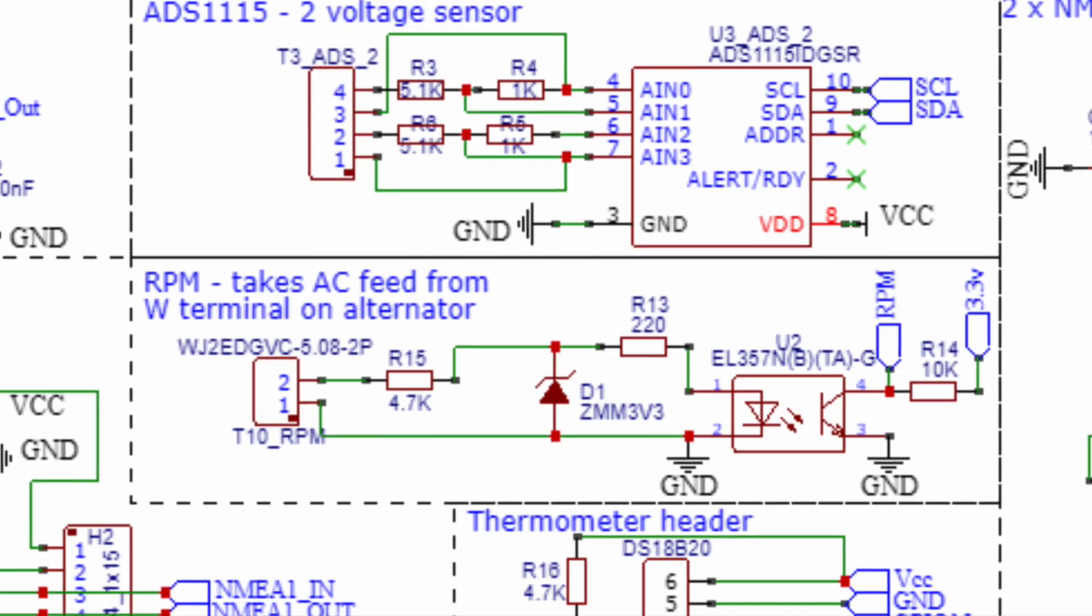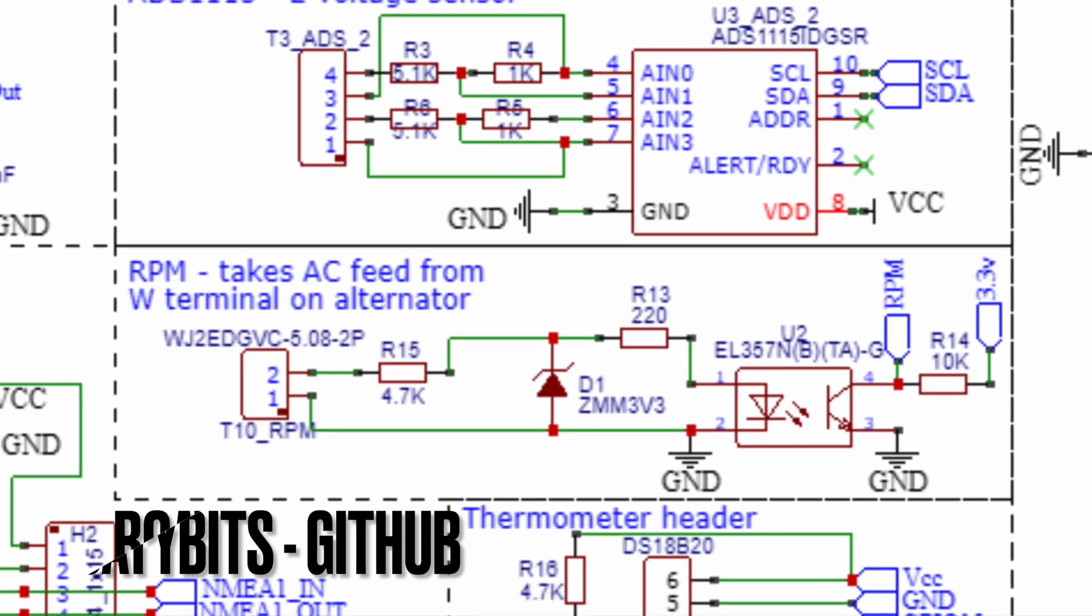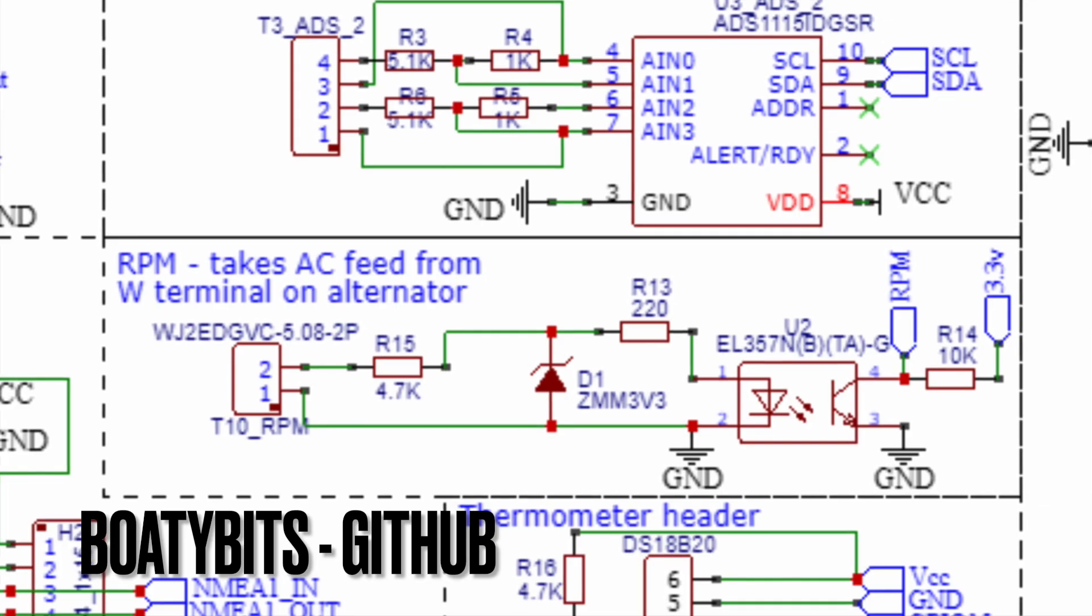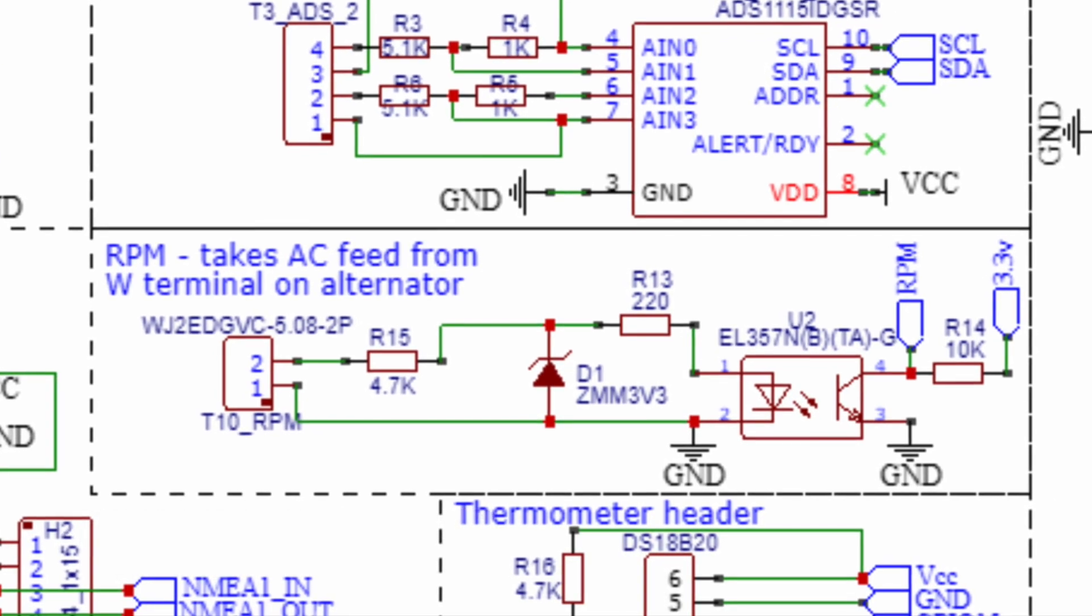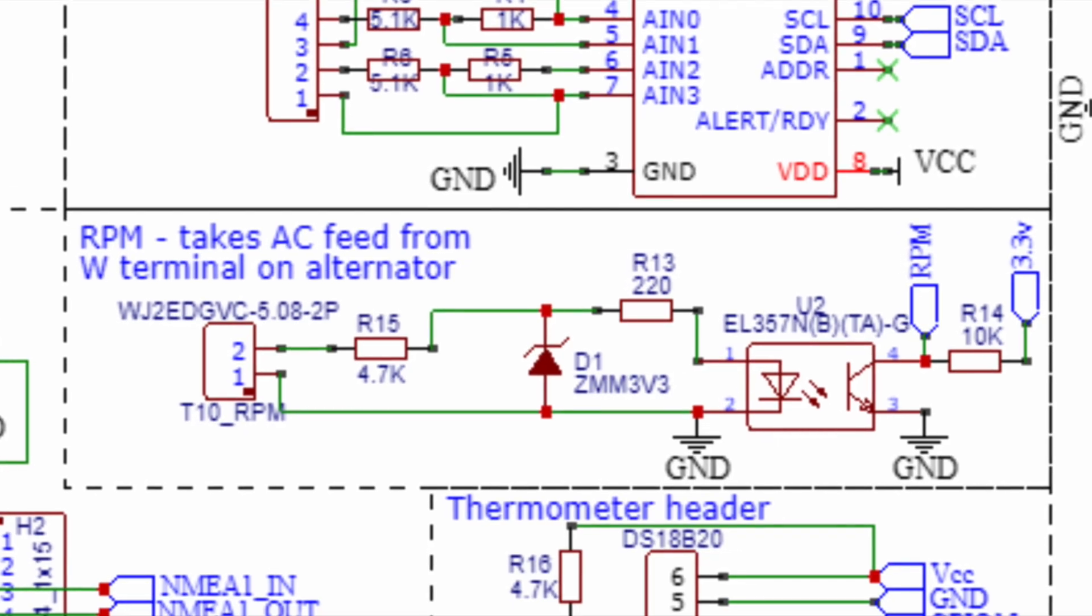After a little bit of research I found a couple of different examples on the web and I found this example where it's using the alternator's W terminal to detect spikes and therefore turning it into some sort of signal.